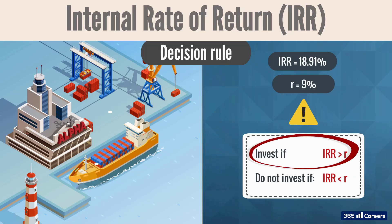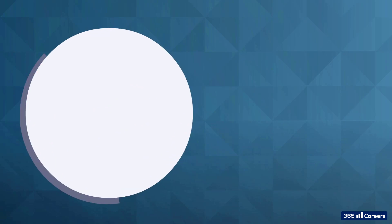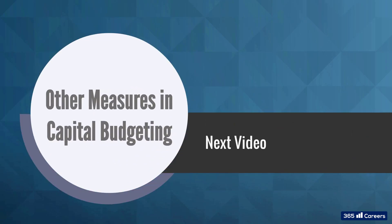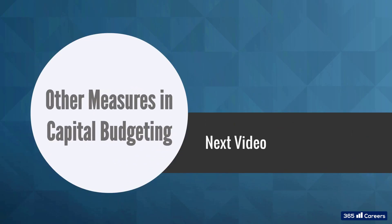Well done — we're making excellent progress. We are done with NPV and IRR, which are crucial. In our next videos, we'll focus on four other measures used in the capital budgeting process. Thank you for watching.